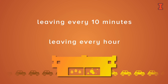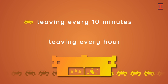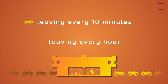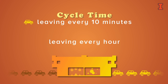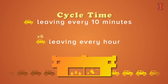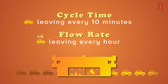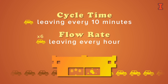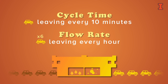The ten-minute gap between one car leaving and the next car leaving we will call the cycle time. If we look at the number of cars leaving per unit time — in this case an hour — we will call it the flow rate. So the flow rate for our car wash is six per hour, and the cycle time is ten minutes.